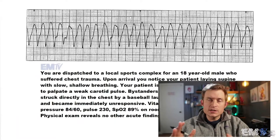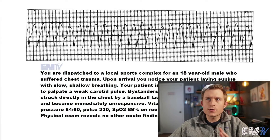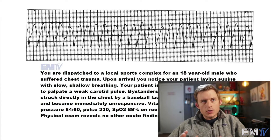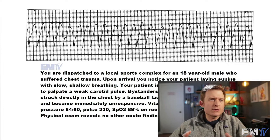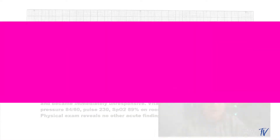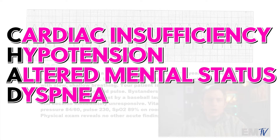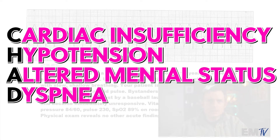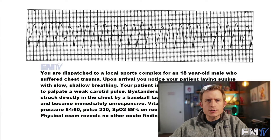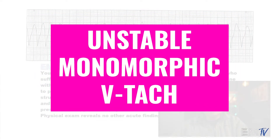Rhythm identification isn't the only thing that matters in Static Cardiology for scoring points and getting the cards correct — you do have to treat this patient appropriately. When deciding what algorithm to use, we need to first determine if the patient is stable or unstable. For unstable criteria I use the acronym CHAD: cardiac insufficiency, hypotension, alteration in mental status, and dyspnea. Based on the patient's presentation and vital signs, this patient meets several CHAD criteria. So my final diagnosis for Static Cardiology would be an unstable monomorphic VTAC.